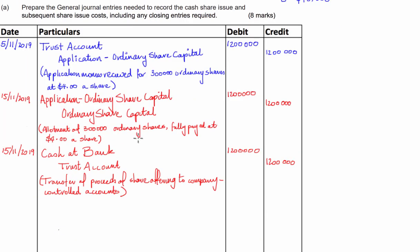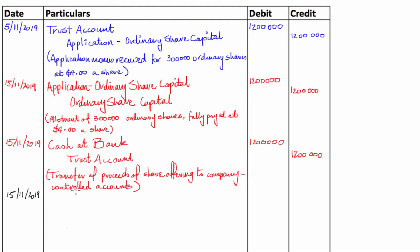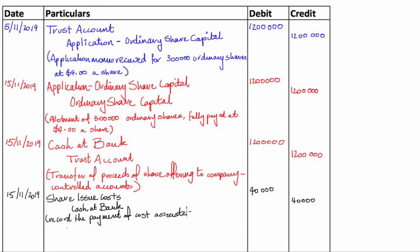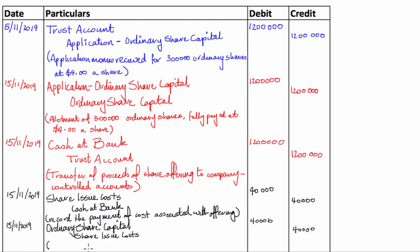Finally, we need to record the payment of the costs associated with the share issue, in two steps. First, we record the movement of the cash: we debit share issue costs for $40,000 and credit the company's bank accounts to reduce them by $40,000. This is to record the payment of costs associated with the offering. Then we record the associated reduction in the company's equity: we debit ordinary share capital for $40,000 and credit share issue costs, annotated as: transfer of share issue costs.